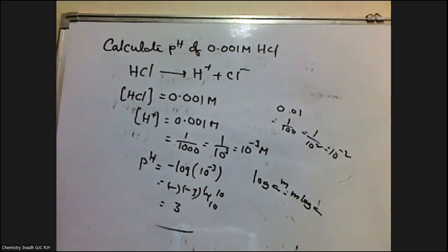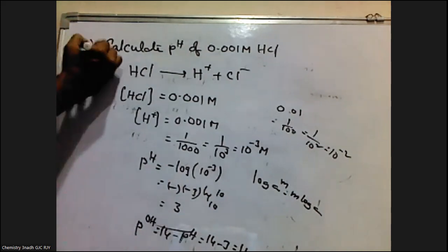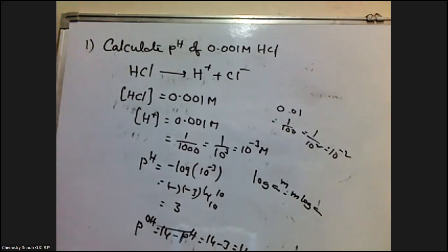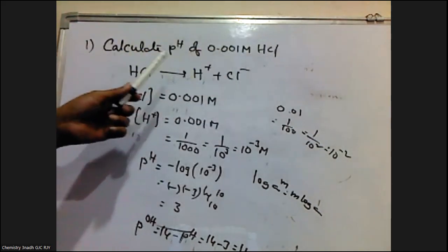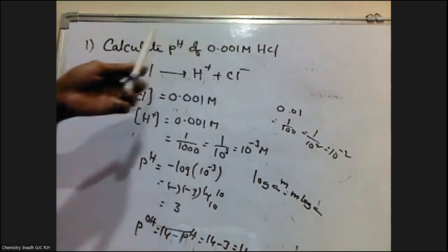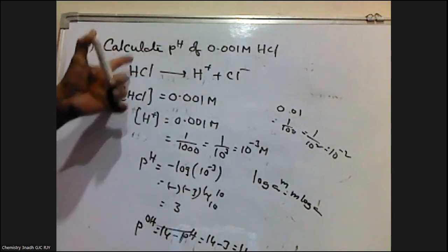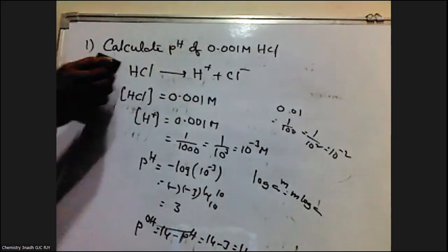If pOH is asked for the same solution, pOH is equal to 14 minus pH, which gives 14 minus 3 equal to 11. This is one kind of problem. Strong acids and strong bases dissociate completely, so the concentration of the acid or base is completely equal to the concentration of hydronium ion or hydroxyl ion, respectively. Whatever concentration of strong acid we have taken, it is completely dissociating and giving the H⁺ ion concentration.